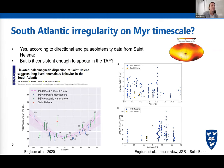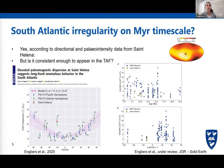We did a paleodirectional study, published in PNAS in 2020, where we found that the dispersion of our directions was a lot higher than expected from a GAD field at that latitude — around 11 degrees dispersion — but we found a dispersion of about 21 degrees, suggesting the field was behaving anomalously at that time. Our paleointensities, shown as VADMs, which are under review at JGR, also show anomalous behavior at St. Helena around 10 million years ago, suggesting the South Atlantic had irregular behavior on a multi-million-year timescale.